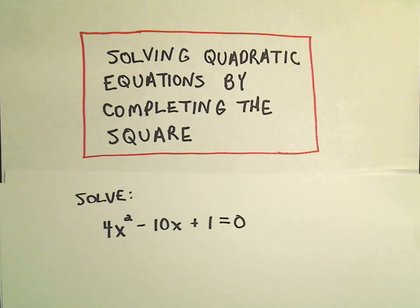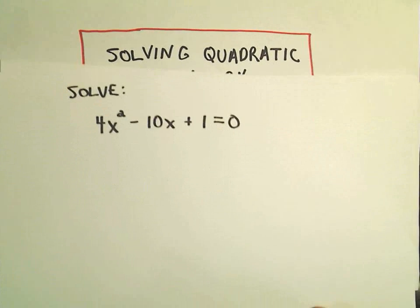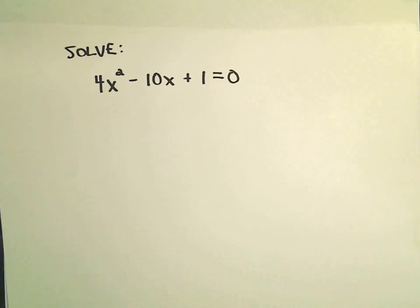Alright, in this video I want to solve an equation by completing the square. So in this case we have 4x² - 10x + 1 = 0. This one's going to be a little trickier because we're going to end up getting fractions.